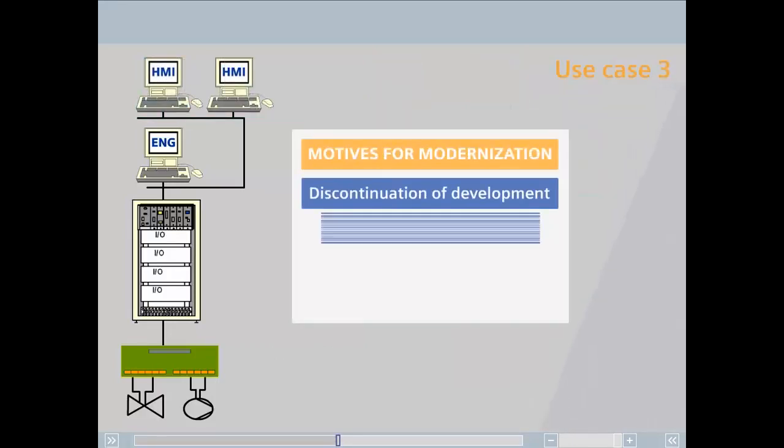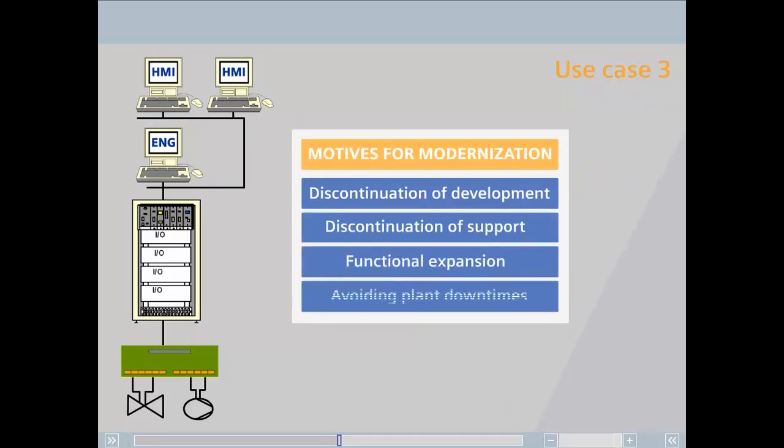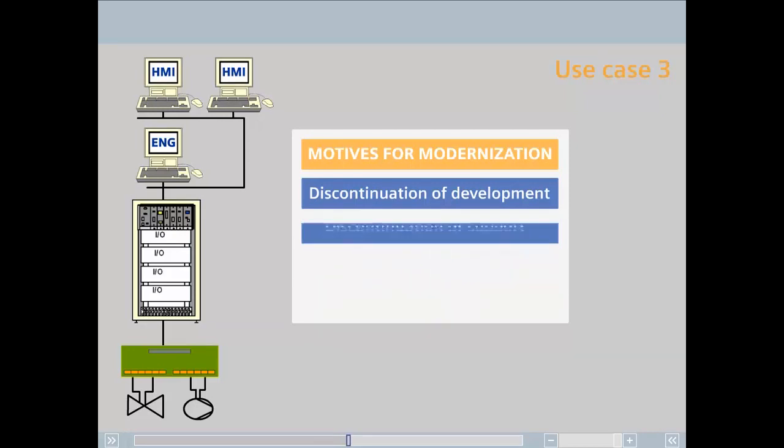The discontinuation of a process control system by the vendor, in other words discontinuation of further development and support, is the main reason for a comprehensive plant modernization. The need for functional expansion or the desire to avoid plant downtimes can also be the motive for modernization.